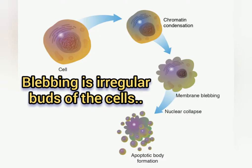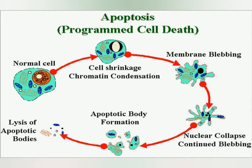Blebbing is the formation of irregular buds from the cells. They break off from the cell and are phagocytosed — that is, they are engulfed by other cells. So the cells are essentially being eaten, and in return those cells die. It is programmed cell death because there are so many biochemical events and changes taking place inside the cell that ultimately lead to the death of the cell.